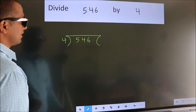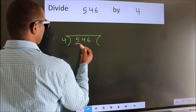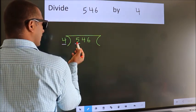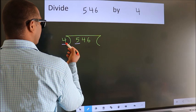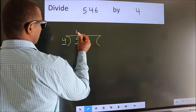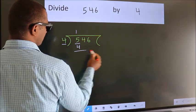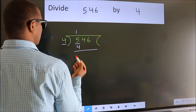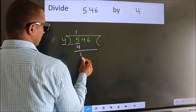This is your step 1. Next, here we have 5, here 4. A number close to 5 in the 4 table is 4 times 1 is 4. Now, we should subtract. We get 1.